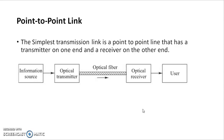In a transmission link, information is in the form of zeros and ones. We require an optical transmitter — an LED source or laser source — then a type of optical fiber, either single mode or multimode. If the length is large, splicing is required to connect two fibers. At the receiving end, we have an optical receiver, which is a detector — a PIN diode, photodiode, or avalanche photodiode — and then decision circuitry provides the output in the form of 1s and 0s.